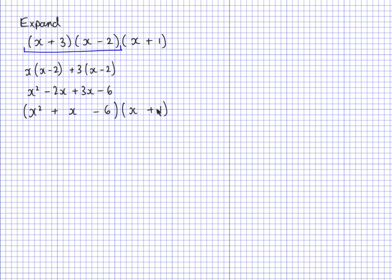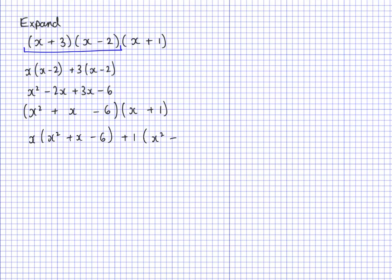This blue bit is this bit here. This entire line is an equivalent expression to the top line, because now I'm multiplying it to the x plus 1 again. The x needs to multiply to each of these three things inside here, and the 1 needs to multiply to each of these three things here. So I write: x times (x squared plus x take away 6), and then plus 1 times (x squared plus x take away 6).